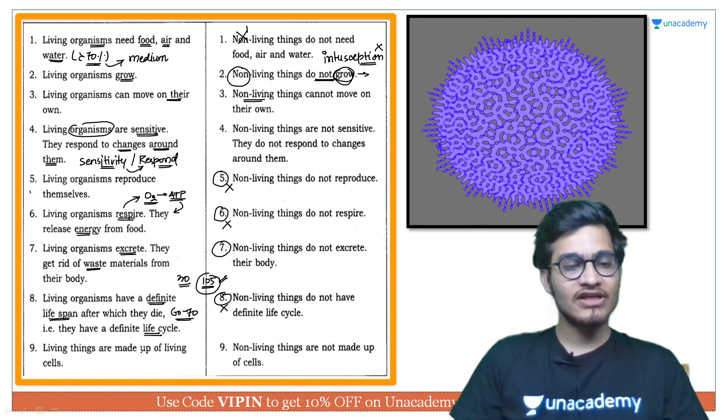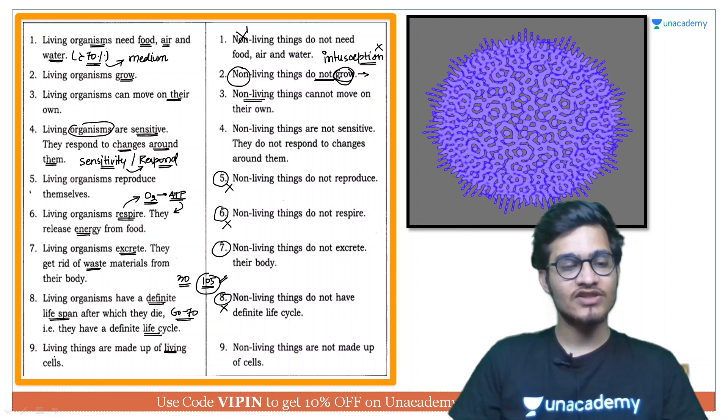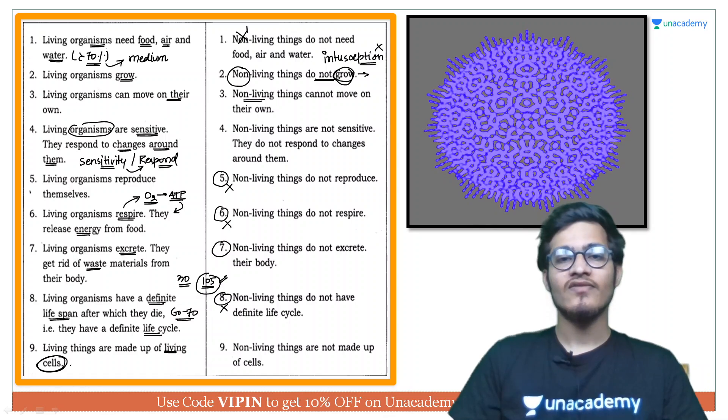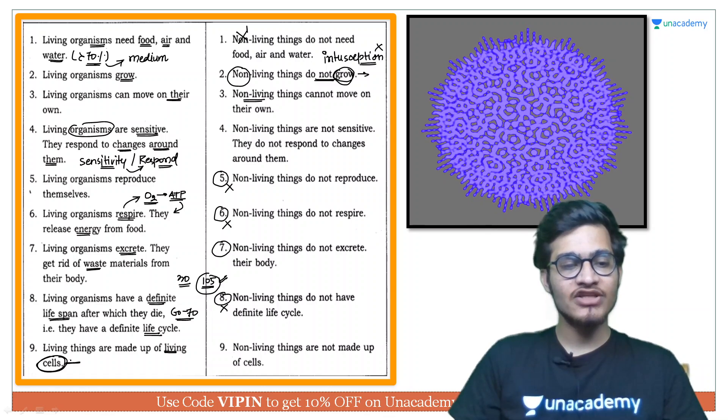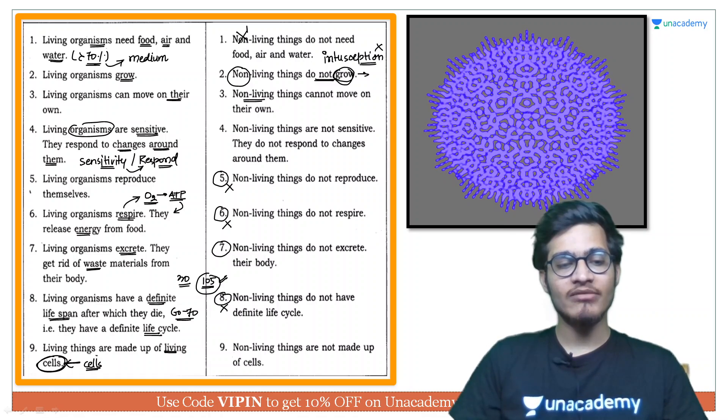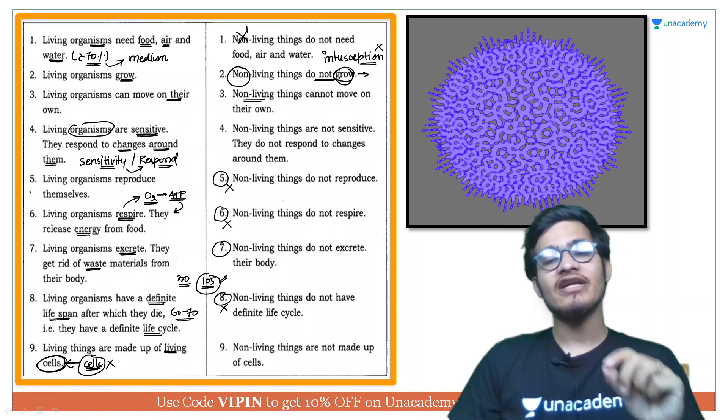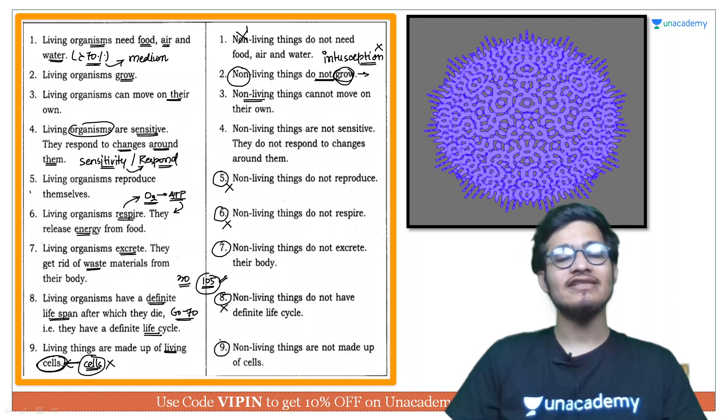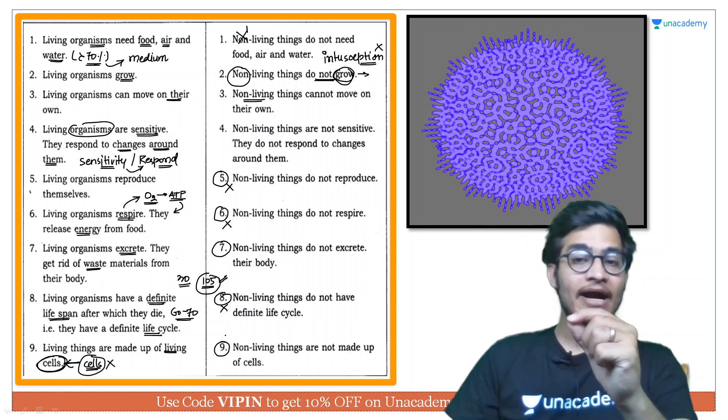Living things are made up of living cells. Sabse important character toh yahi hai humara, the basic feature of all living organisms is the presence of cell. Aapki body mein cell present nahi hai toh aap living nahi consider kiya jaoge but in case of non-living things cells ki koi presence nahi hoti.